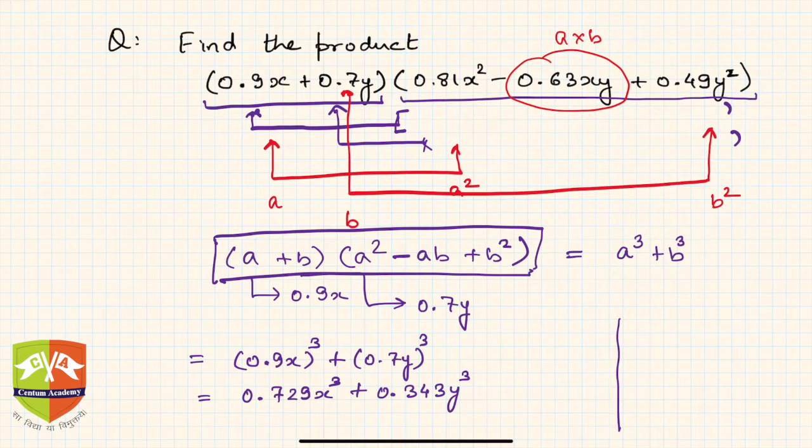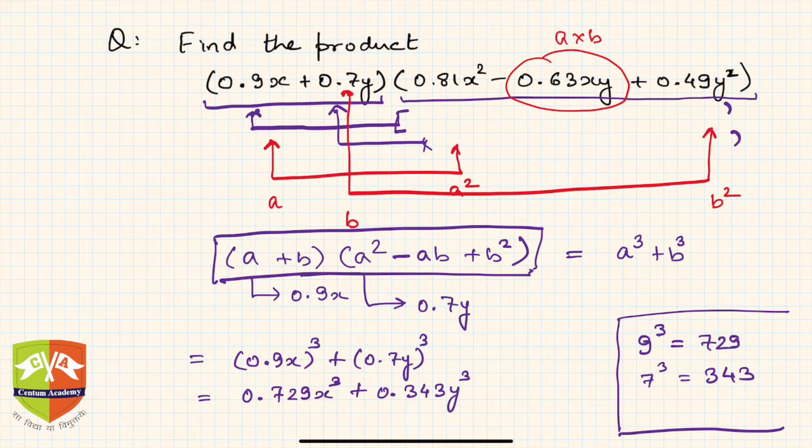Why? Because always remember, 9 cubed is 729 and 7 cubed is 343. So these numbers, it's advisable to remember these values because you will be encountering these terms quite often in mathematics.